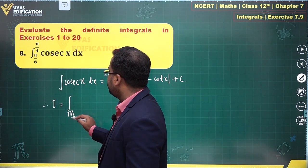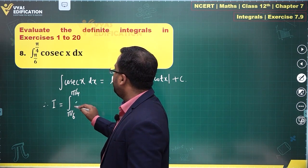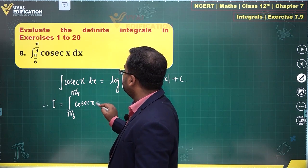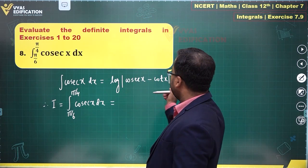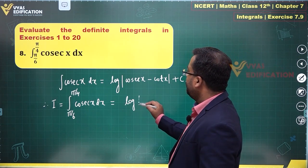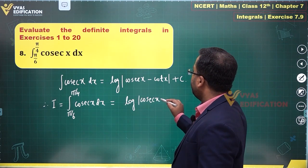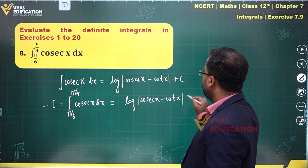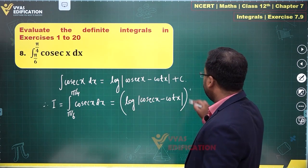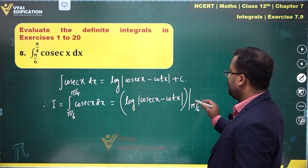Therefore I, which is equal to integral from π/6 to π/4 of cosec x dx, will become equal to: substitute the limits in this, log mod cosec x minus cot x from π/6 to π/4.